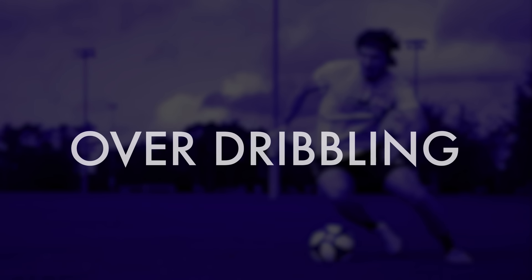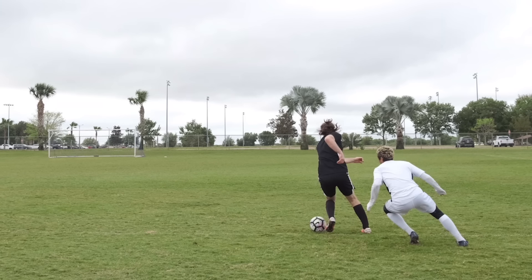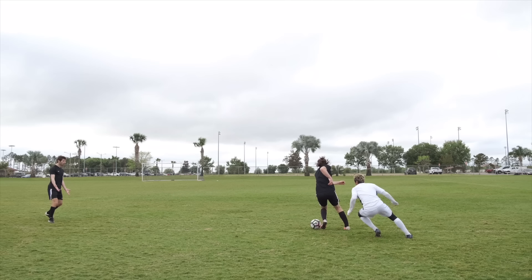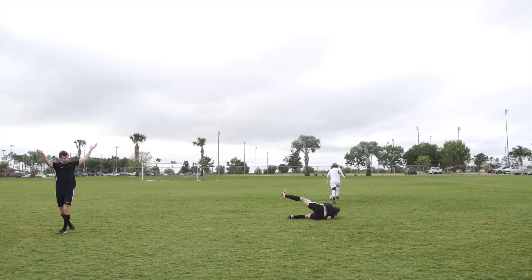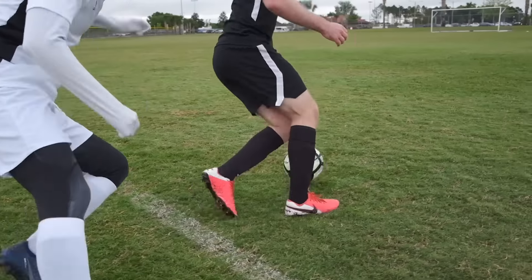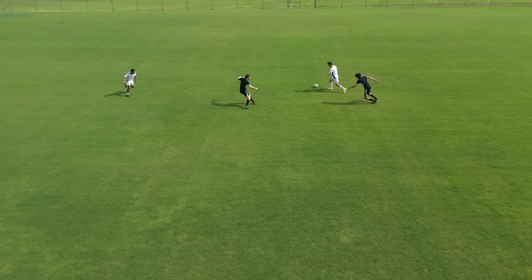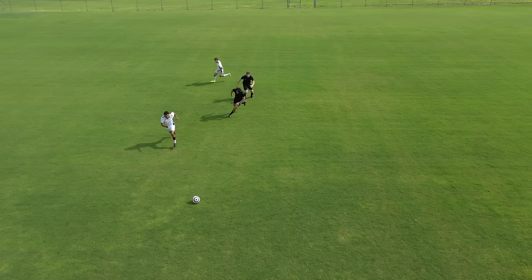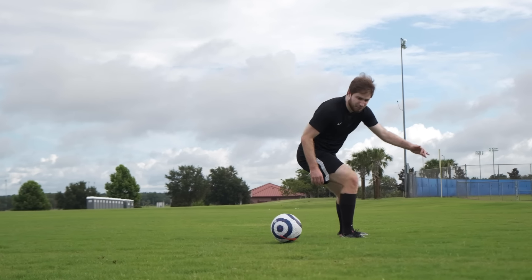Over-dribbling. We all know players who like to dribble a little too much. To make sure that you don't become this player, you have to do two main things. One, you have to be aware of teammates in a better position and actually pass to them. And two, you have to be aware of your own abilities.